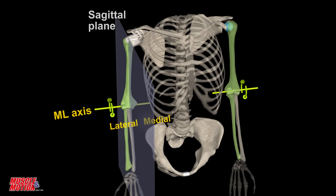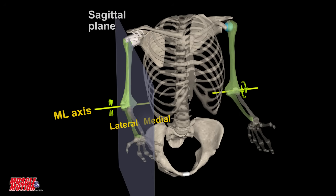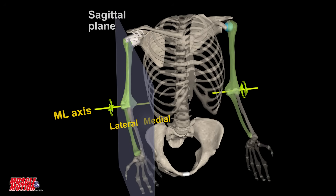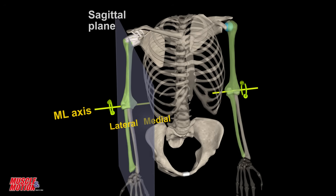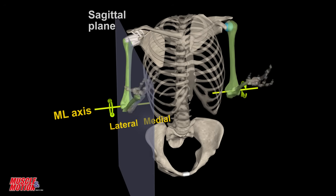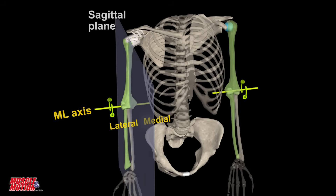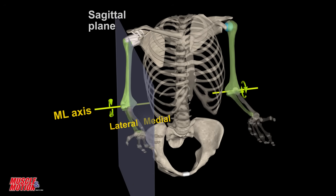Hence, for the elbow, movement occurs in the sagittal plane as flexion and extension around a medial-lateral axis of rotation.